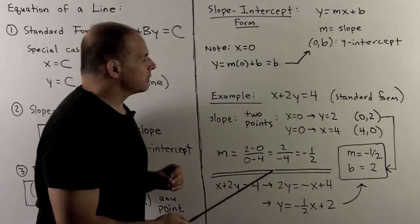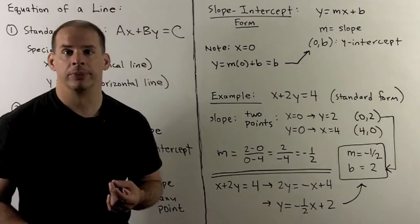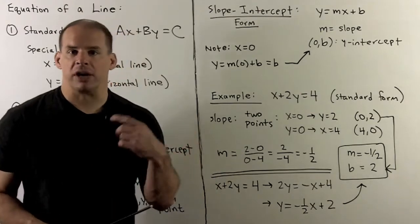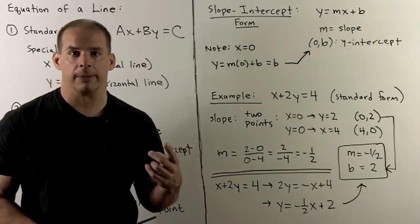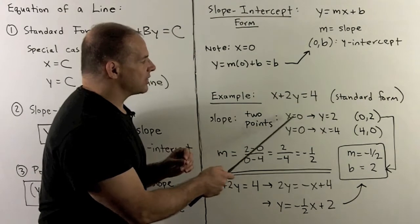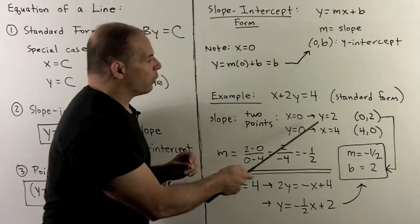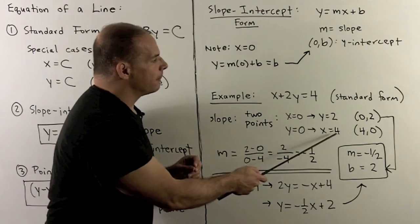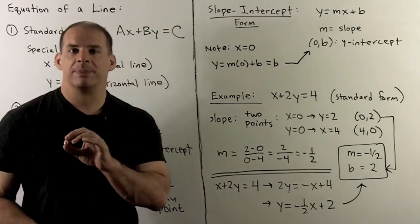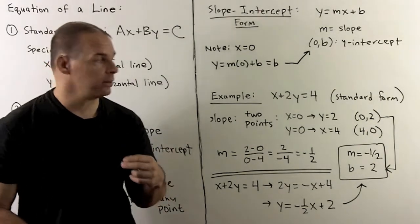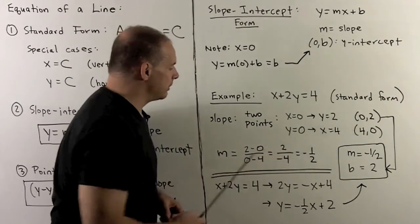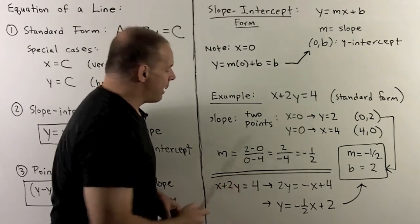For an example, suppose I'm given the line x plus 2y equals 4 in standard form. If I want to find the slope, I find two points and apply the slope formula. I'll look for the x and y-intercepts. Setting x equal to 0 gives y equals 2; setting y equal to 0 gives x equal to 4. So we have the points (0, 2) and (4, 0). The slope is the rise over the run: rise is 2 minus 0 equals 2, run is 0 minus 4 equals minus 4. Reducing gives slope equal to minus one-half.